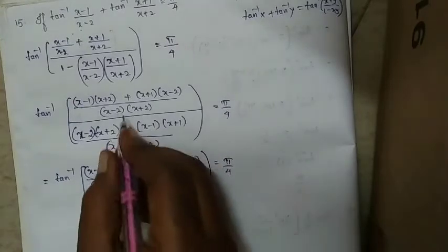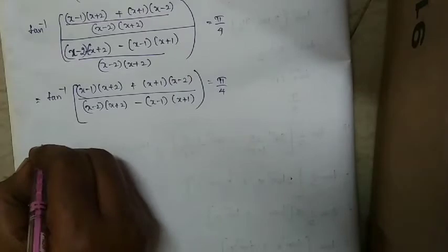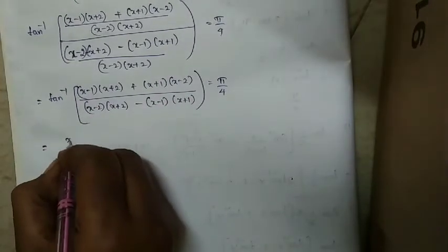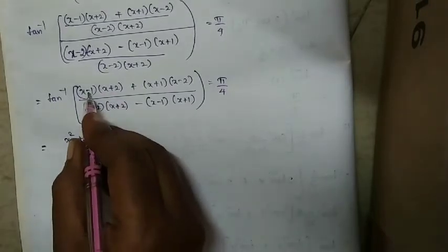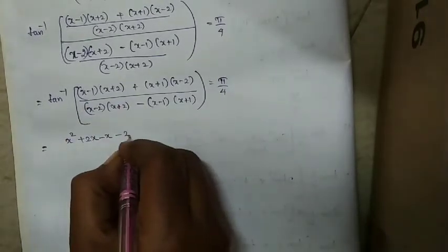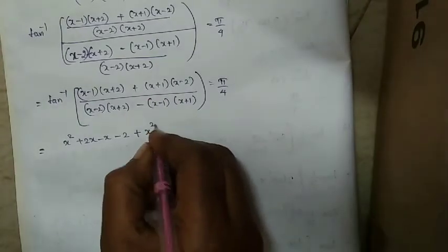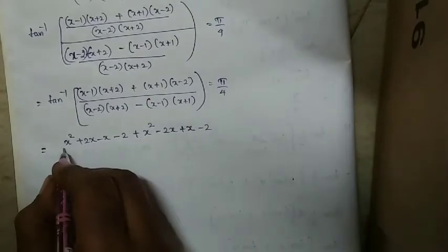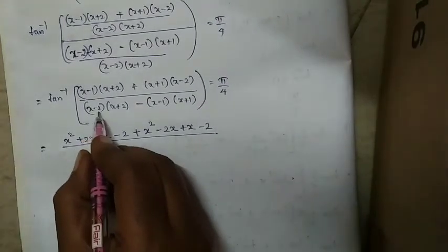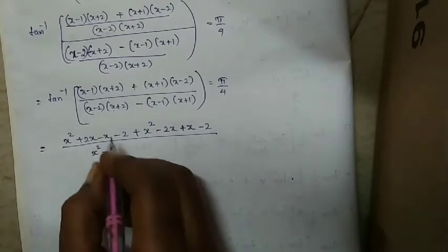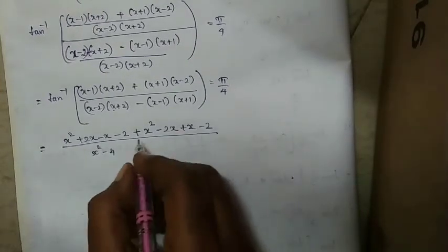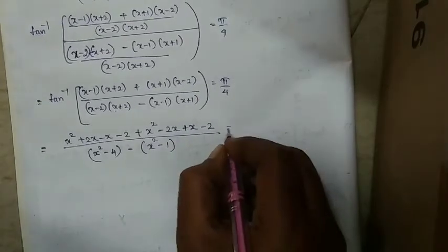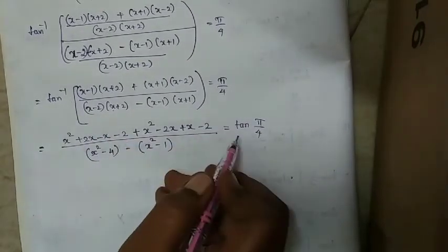Taking tan on both sides, tan of tan inverse equals the argument. So (2x²−4)/(−3) = tan(π/4) = 1. Cross-multiplying: 2x²−4 = −3.